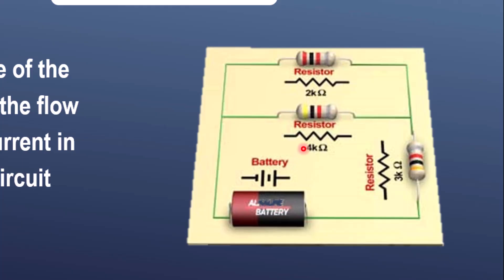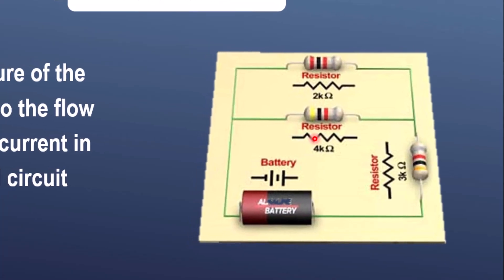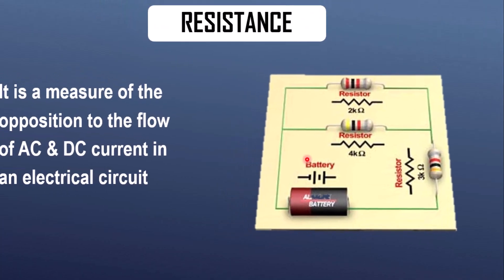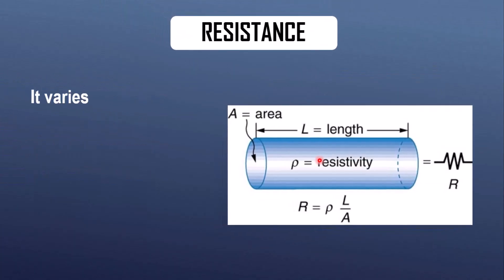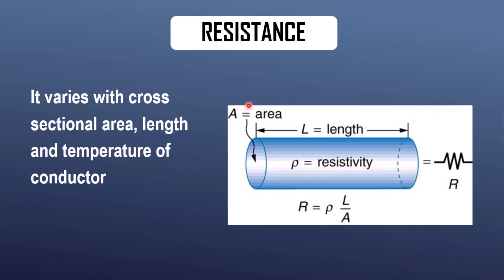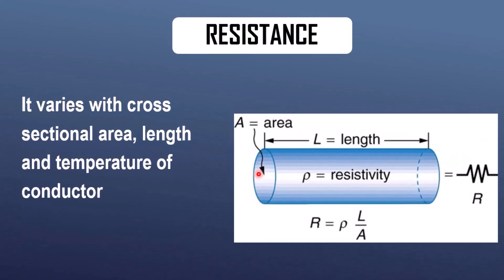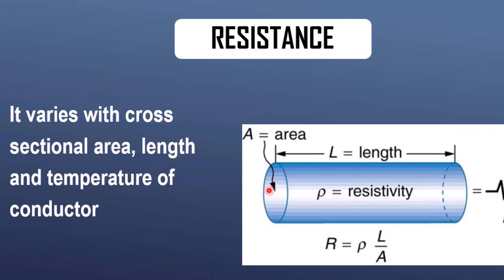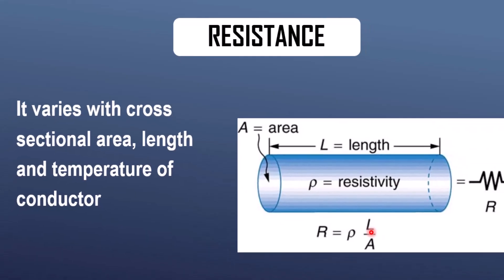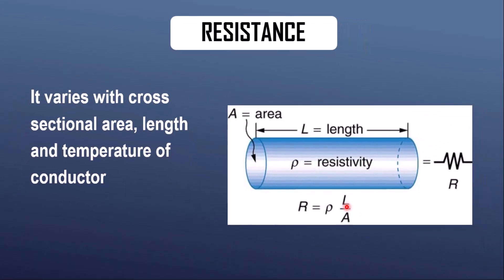So how does a resistor offer resistance to the flow of electric current? Every conductor offers resistance to the flow of electric current based on its intrinsic property, which is the resistivity. The formula of resistivity is rho L over A. We can see that resistance is directly proportional to the length of the conductor and inversely proportional to the area of the conductor.